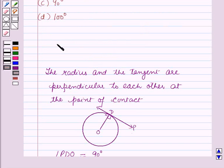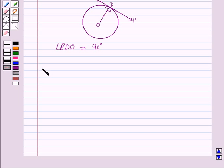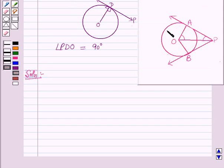This result will work as a key idea for solving this question. Now we will start with the solution. It is given that PA and PB are tangents to the circle with center O.